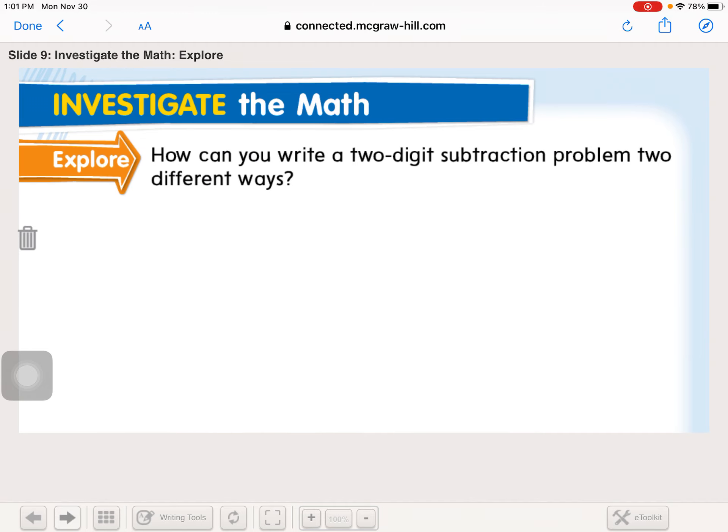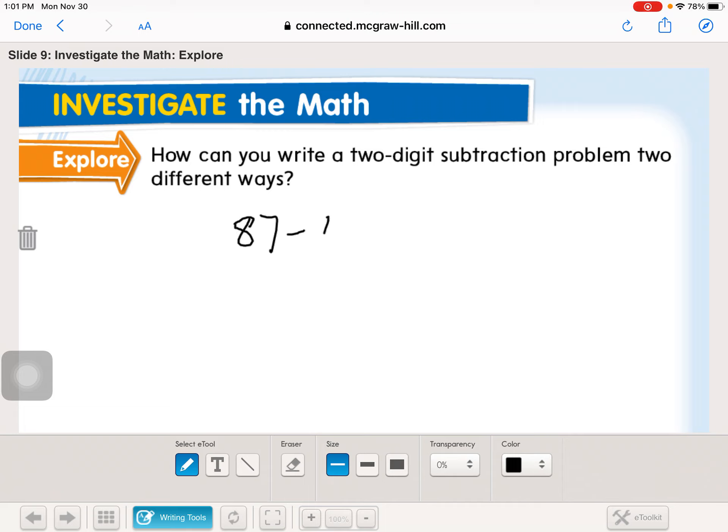All right, so how can you write a two-digit subtraction problem two different ways? So we can actually write a two-digit subtraction problem a lot of different ways, right? We could write it out in words. We could write it out with models. We could write it vertically. We could write it horizontally. Those are the ways that you're most often going to see problems written out, such as 87 minus 42 can be written like this, or 87 minus 42 can be written like this. Now we like this second one because it's so much easier to keep track of what you've regrouped and where everything goes.